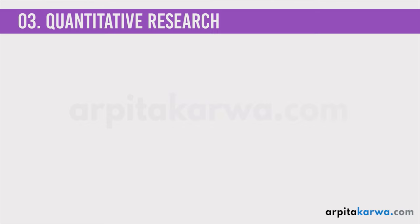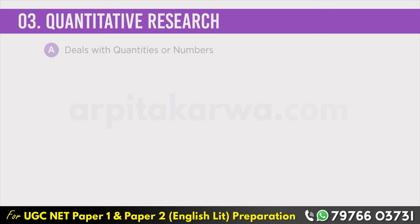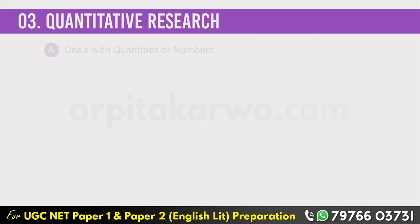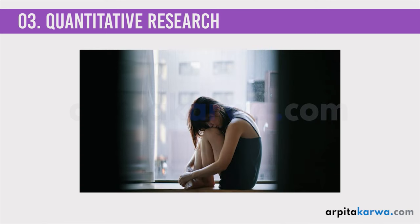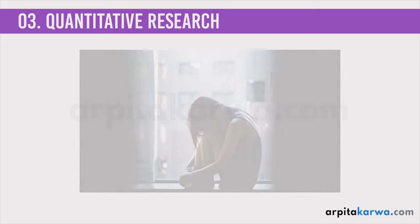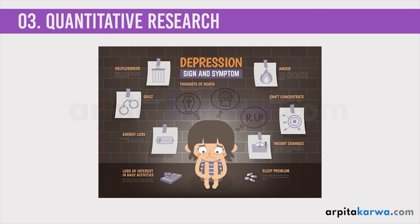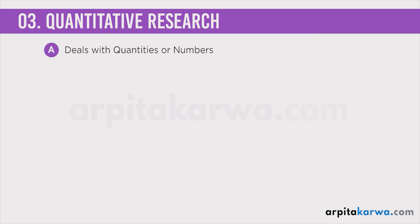Now let's look at the third type of research: quantitative research. From the word itself, you can understand this research deals with quantities — we want to know how much or how many. For example, a study conducted in a neighborhood to find out how many people suffer from mental disorders. After the study, the result might be that out of 500 people living there, 50 suffer from a mental disorder. That data — the quantity — is quantitative research.